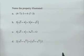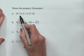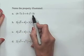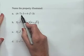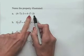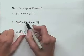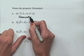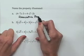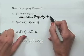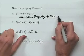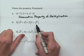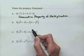In our next problem we consider different properties of numbers. For part A, we have (4 × 7) × 3 = 4 × (7 × 3). Notice that the parentheses have moved from the first pair to the last pair, yet the two expressions are equivalent. This is called the associative property of multiplication.